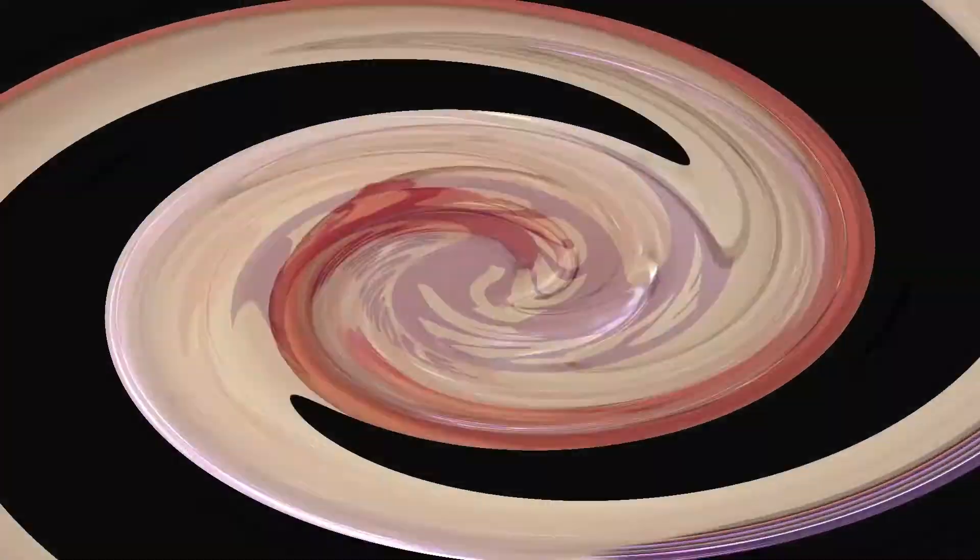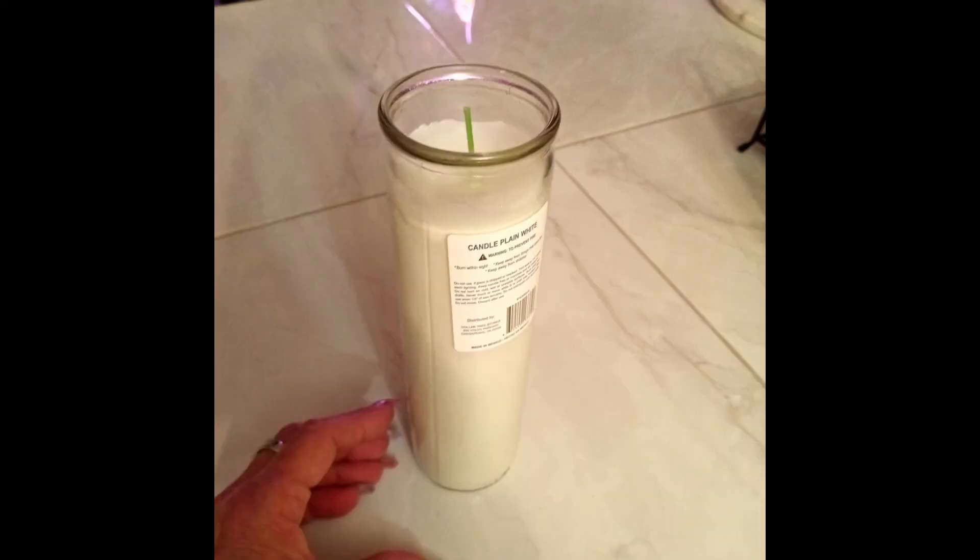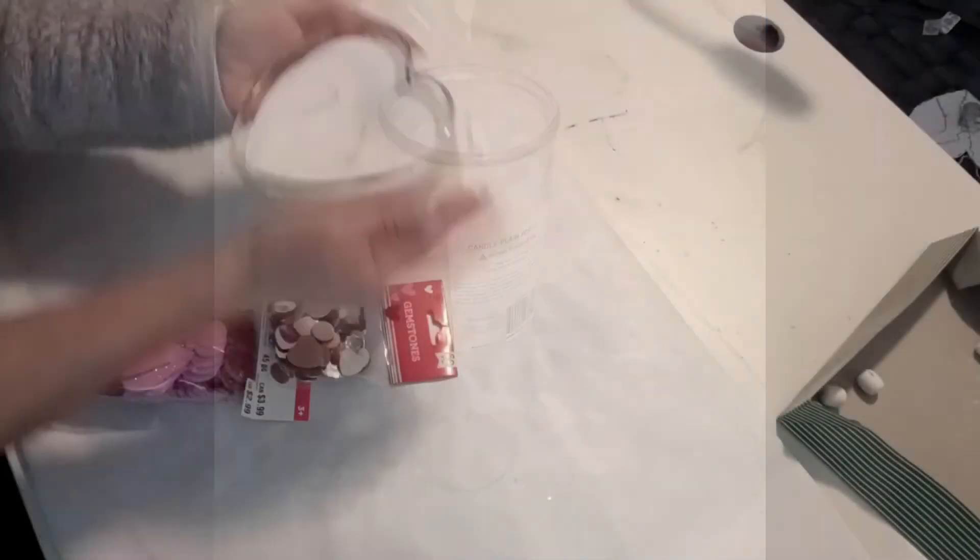Using this heart vase from Dollar Tree, I'm going to take two of these candles also from Dollar Tree. And I'm going to put it for five minutes in the microwave. This is how it looks so far.